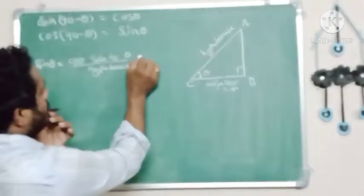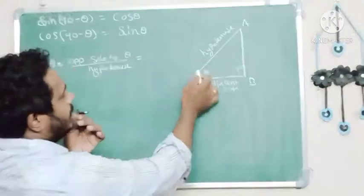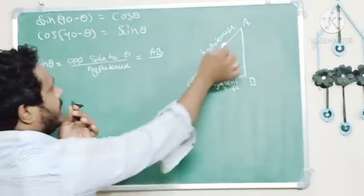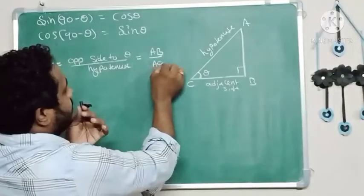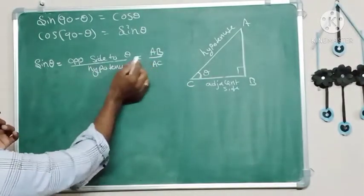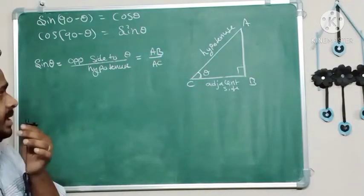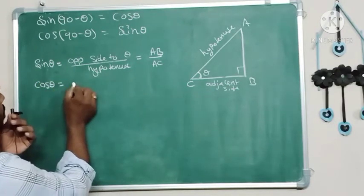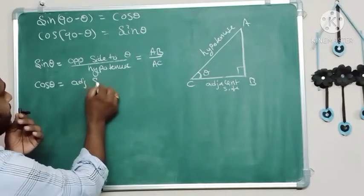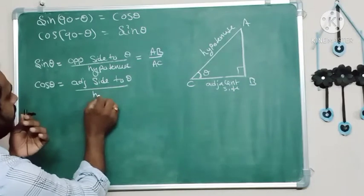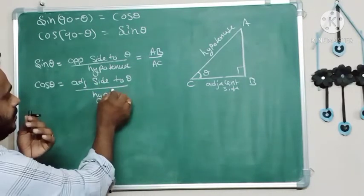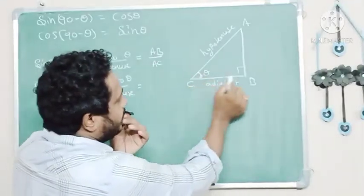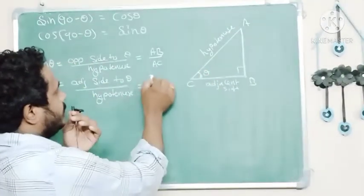The opposite side to theta is AB, so sin theta equals AB over hypotenuse, which is AC. In the same way, the cosine ratio is adjacent side over hypotenuse, so cos theta equals BC over AC.